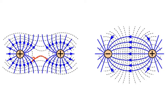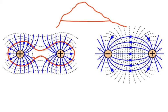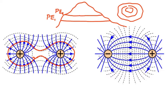Equipotential lines are perpendicular to each electric field line, so right there you would have a right angle. Each equipotential line is at a certain level of potential difference. Imagine looking at a mountain — you can be anywhere on a given level of the mountain and you will have the same potential energy. A different level of the mountain will have a different potential energy.